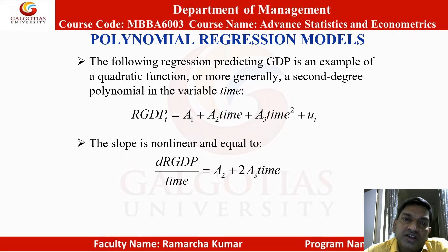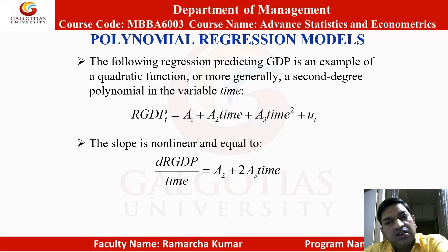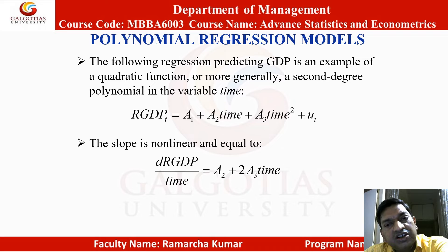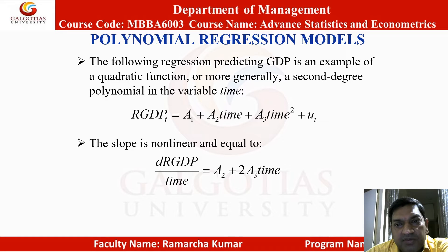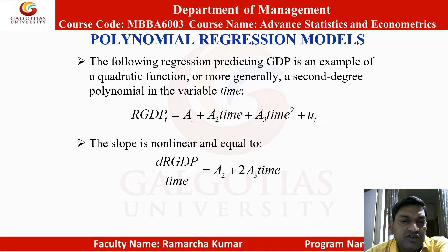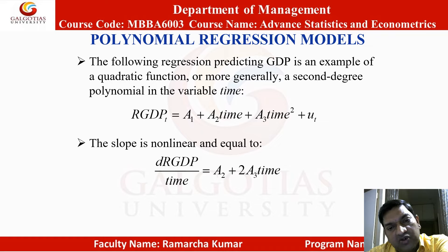Polynomial regression model: the following regression predicting GDP is an example of a quadratic function, or more generally a second-degree polynomial in the variable time. RGDP_t = a1 + a2 times time + a3 times time² + u_t. The slope is non-linear and is equal to dRGDP/dtime = a2 + 2 times a3 times time.